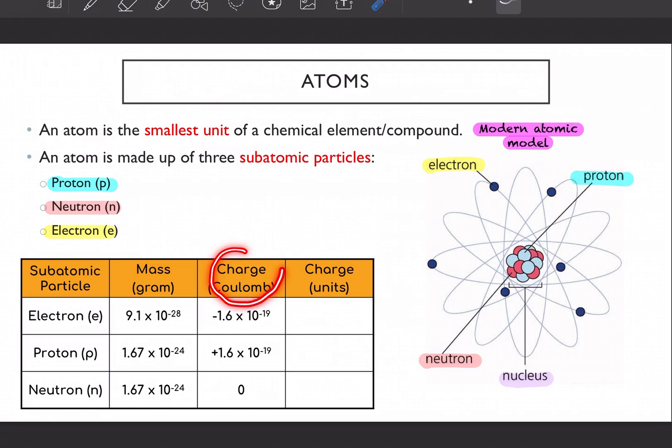So the charge of your electron in coulomb is negative 1.6 times 10 negative 19. Whereas for proton, it is positive of that value. Neutron pula, you have zero charge. So that means that your neutron, it is neutral.